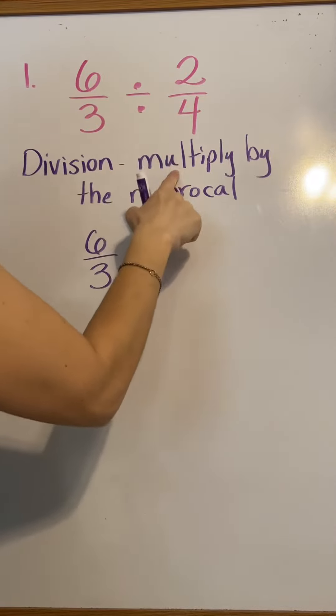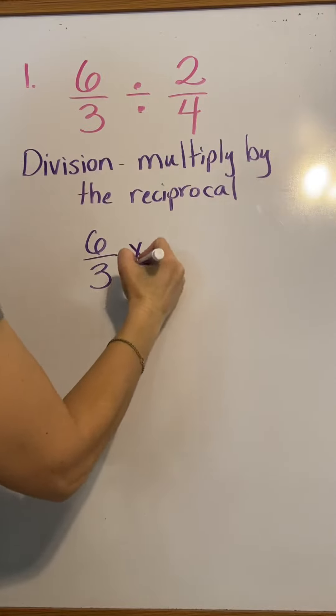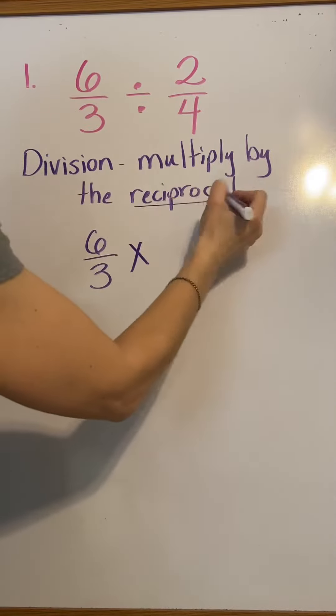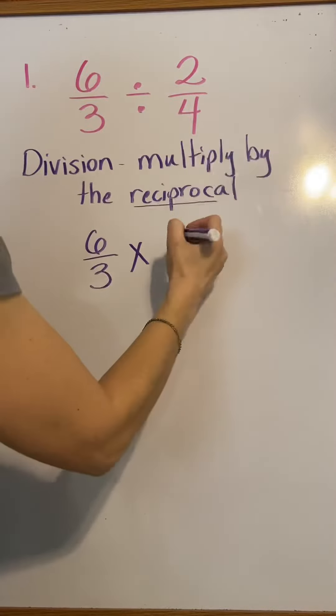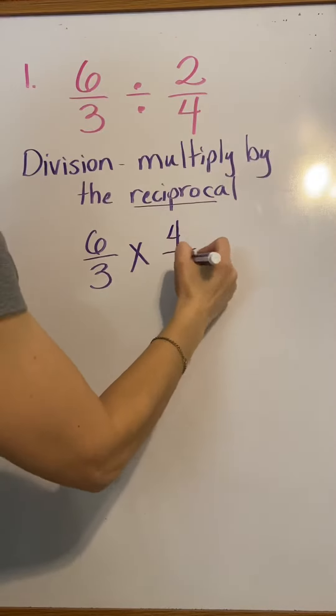We're going to change the division to a multiplication. And then, the reciprocal is when we take this second number and flip it over, 4 over 2.